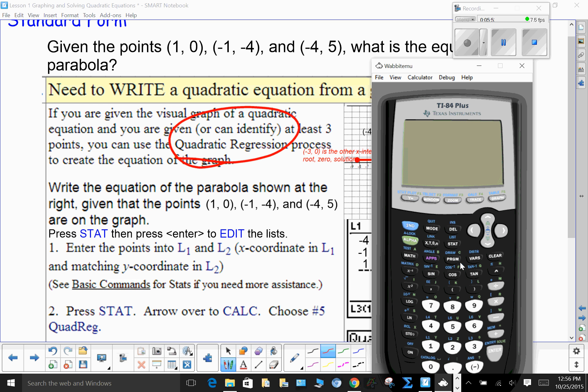Now, I'm going to go and press stat, that's this button here, and I want to edit a list. So, I just hit enter. I've got list 1 and list 2. My x's are going to go in list 1, my y's in list 2. So, I'm simply going to put in 1, and then -1, and then -4. Those are the x's, 1, -1, and -4. I'm going to move over to list 2. I'm going to put in the corresponding y values. So, next to 1, I have to put 0. So, I put in 0, and I hit enter. Then I put in -4, because that's what goes with -1. And then I put in 5, because that's what goes with -4. Now, I have my x's in list 1, my y's in list 2. You don't have to do anything to store them. They're stored. I simply press stat.